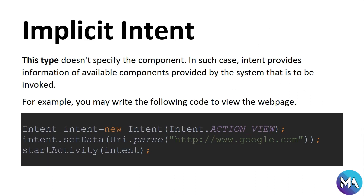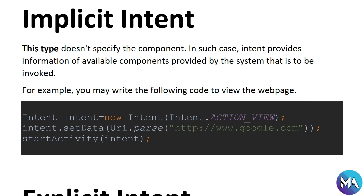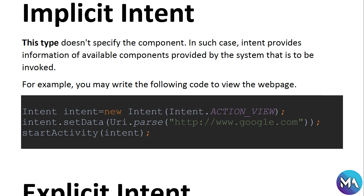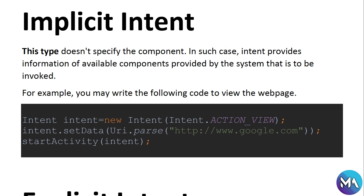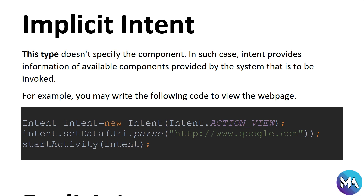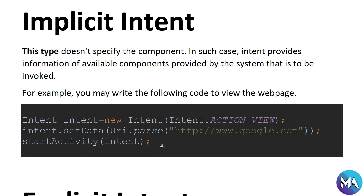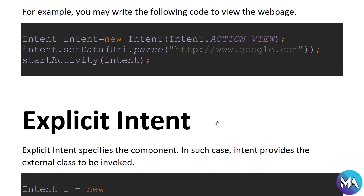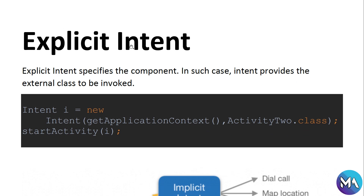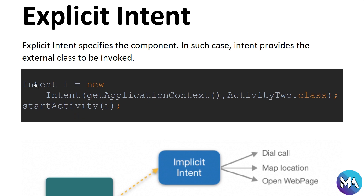Implicit intents do not specify the component. In such cases, the intent provides information and an available component provided by the system is invoked. For example, to view a web page you would call: Intent i = new Intent(Intent.ACTION_VIEW); i.setData(Uri.parse("https://google.com")); startActivity(i); This is the form of implicit intents. We will see in our app how to make explicit intents — like we created in the previous video, which specifies the component and keeps the user in our app.